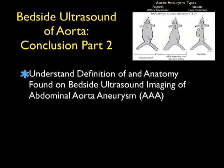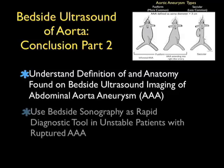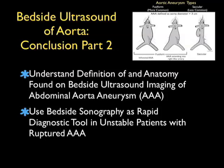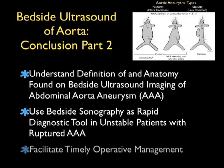In conclusion, thanks for joining me for this SoundBytes module covering Part 2 of Bedside Ultrasound of the Aorta. Hopefully through this module you now understand the definition and anatomy found on bedside ultrasound imaging of an abdominal aortic aneurysm, and can use bedside sonography as a rapid diagnostic tool for picking up a AAA. Remember that if the patient has unstable hemodynamics and a large AAA is seen on bedside sonography, that patient must be assumed to have a rupturing AAA — using bedside sonography, we can facilitate timely operative management and possibly save a life.